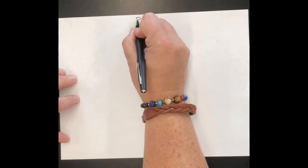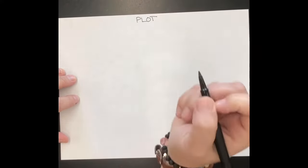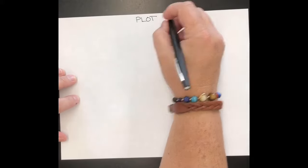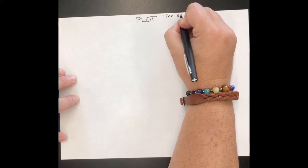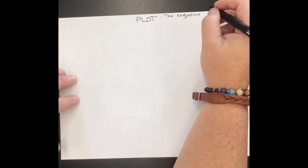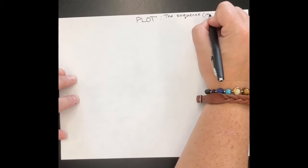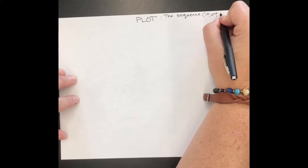We're going to use the story of My Favorite Chaperone to review the elements of plot. Plot is just the sequence of events—first, second, third—the order of events in a narrative.